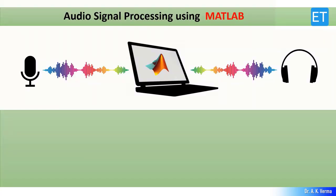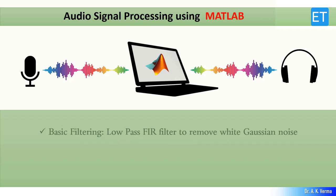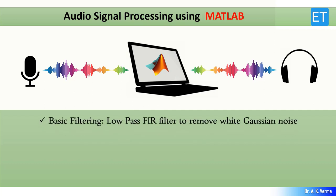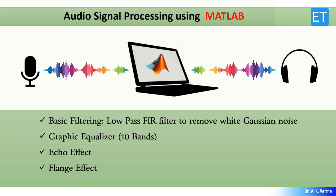In this video, I'm going to explain how you can do some basic signal processing on captured audio signals in MATLAB. First, I will show you basic filtering — how you can implement the low-pass FIR filter to remove white Gaussian noise in an audio signal. Then I will show you the graphic equalizer for 10-band frequencies, the echo effect, the flange effect, and the reverb effect.